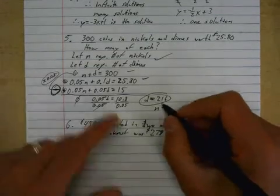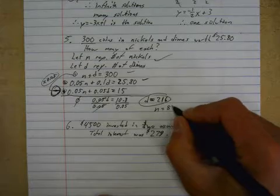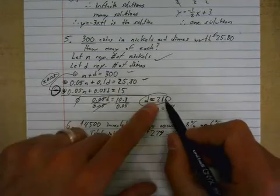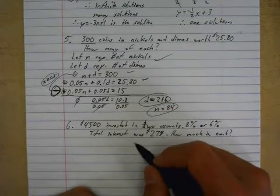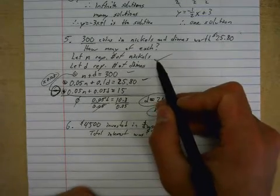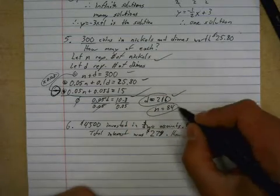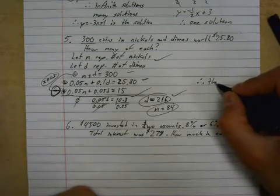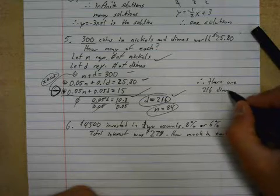Now n - I'm not sure if your teacher makes you show this work but I don't. I know that 216 of them are dimes, and I get 84 of them. So I'm subtracting from 300 there. Once you've got d, subtract from 300, get n. So one mark for the let statements, one mark for each equation, one mark for the work, one mark for the d, one mark for the n, but I won't give you that mark until you write a statement there. Therefore there are 216 dimes and 84 nickels.